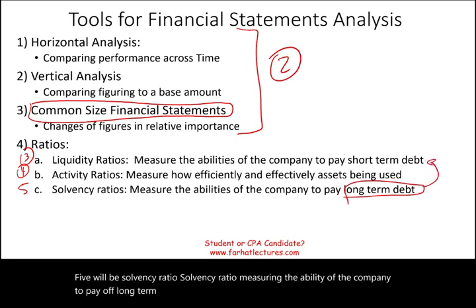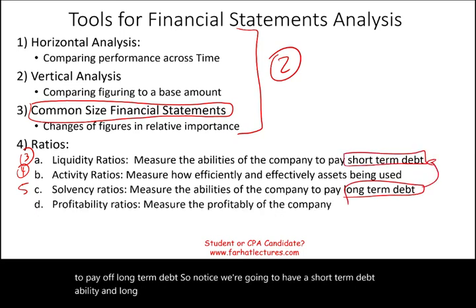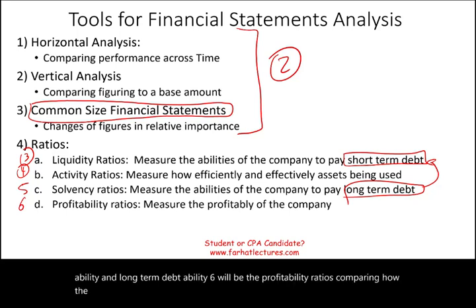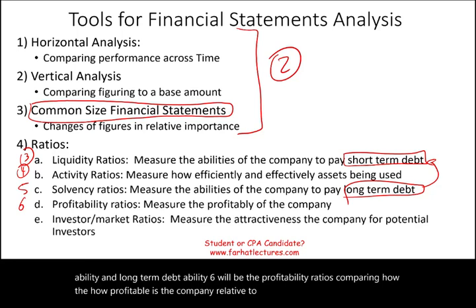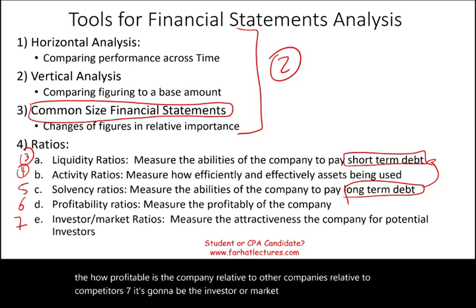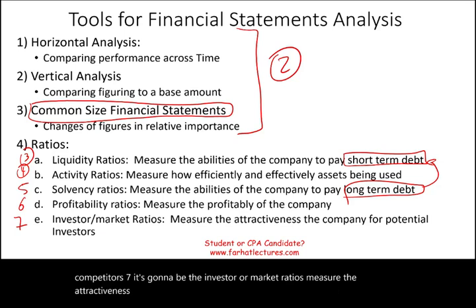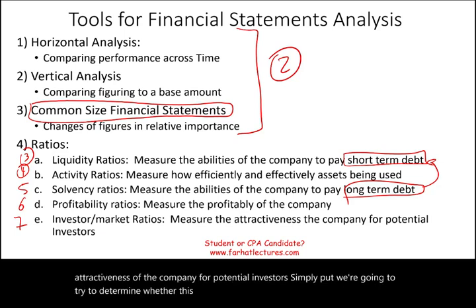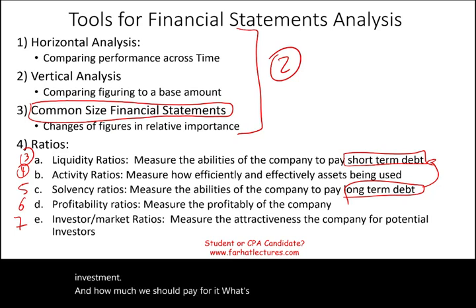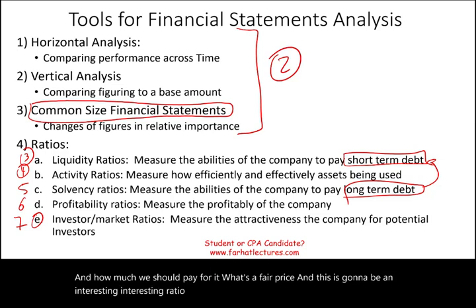So we're going to have a short-term debt ability and long-term debt ability. Number six will be the profitability ratios — comparing how profitable the company is relative to other companies and competitors. Number seven will be the investor or market ratios, measuring the attractiveness of the company for potential investors — trying to determine whether this company is a good investment and how much we should pay for it, what's a fair price. It's going to be an interesting set of ratios to look at.